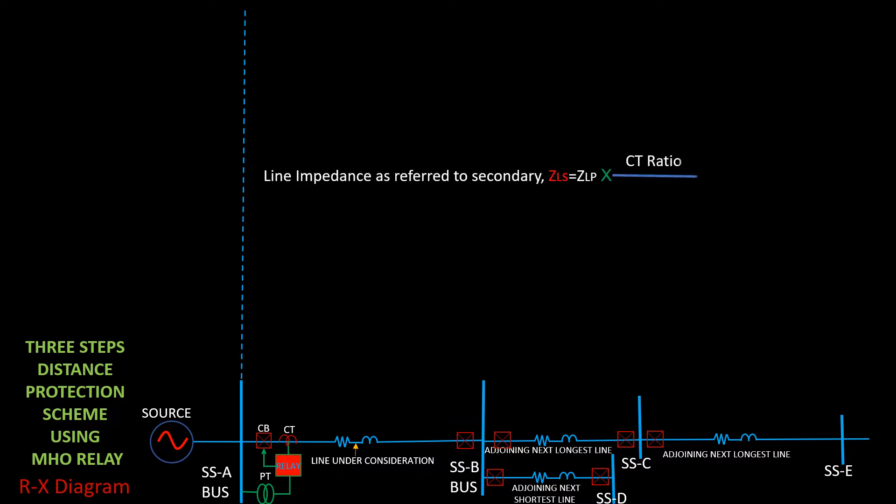For plotting RX diagram, we have to calculate line impedance from the line data as referred to secondary, ZLS.